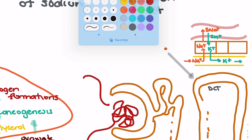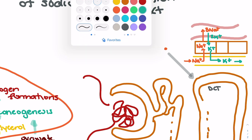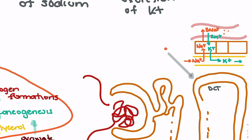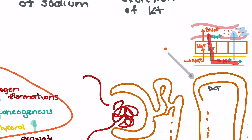This sodium retention also impacts water balance. As sodium builds up in the blood supply, water follows the sodium, increasing blood volume. Overall, hydrocortisone acting on the distal convoluted tubule promotes reabsorption of water and sodium while promoting the excretion of potassium.